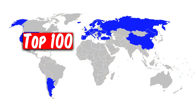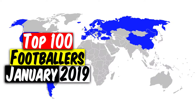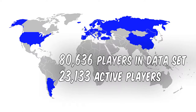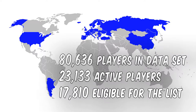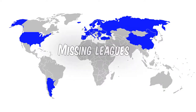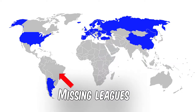The top 100 list we are about to see has been generated based on matches up to January 2019. The dataset contains more than 80,000 players, out of which 23,000 players have appeared in at least one match during the last 12 months. Out of these, 17,810 players have recorded at least 900 minutes of playing time and are eligible for the list. Note that there are many competitions not covered in the dataset, such as the Brazilian league, the Japanese league, or any of the African leagues.